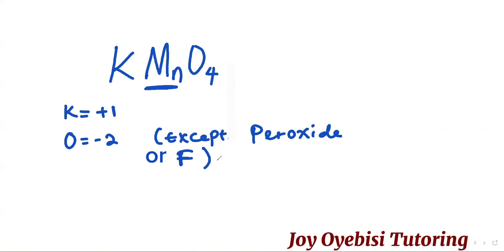So now that we know K and oxygen, we're going to go ahead and solve for Mn. And all we have to do is plug in the values of K and oxygen. So K is 1 plus manganese, we do not know, and then oxygen, negative 2 times 4, which is the total number of oxygen. Another rule is that the sum of the individual oxidation numbers in a neutral compound is equal to 0.